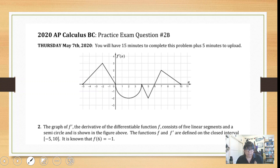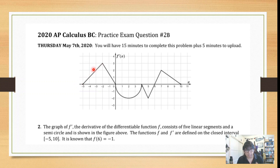The graph of f prime, the derivative of a differentiable function called f, consists of 5 linear segments and a semicircle shown in the figure. There's segment 1, segment 2, segment 3, segment 4, and segment 5 — those are straight line segments. If you ever need the equation of those, it's y = mx + b, so you may want to write down the slopes of each of those lines just to start off.